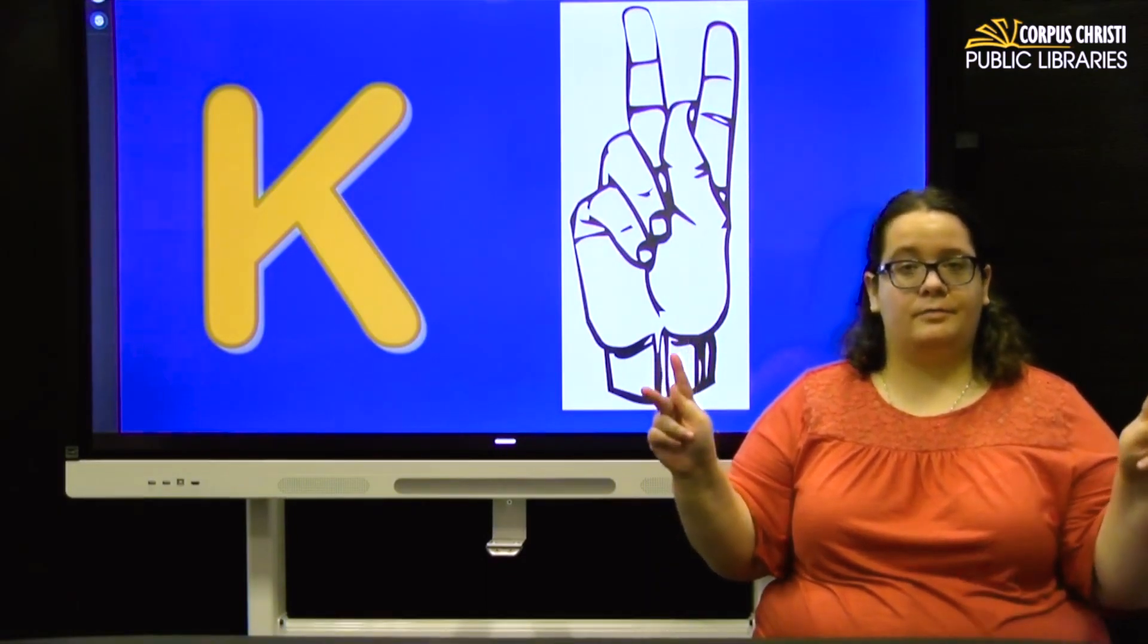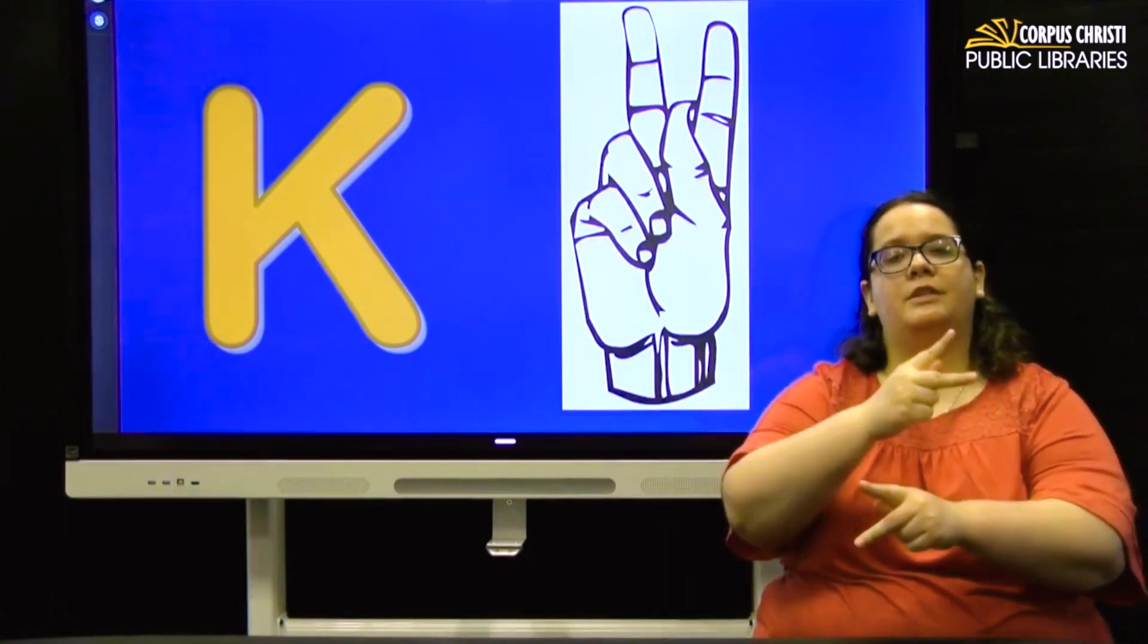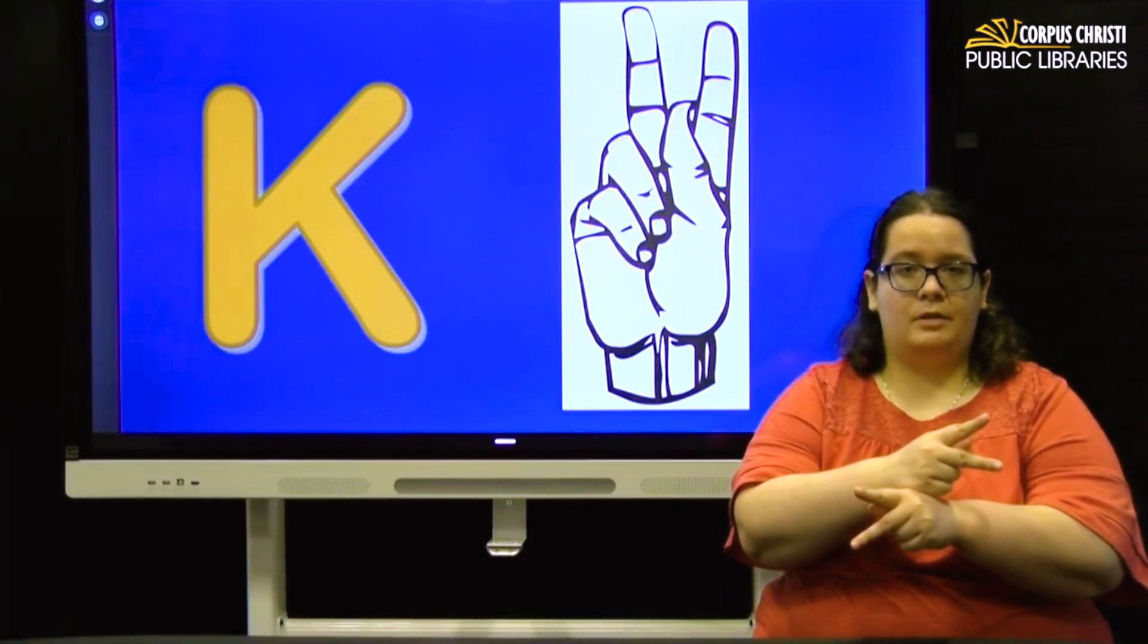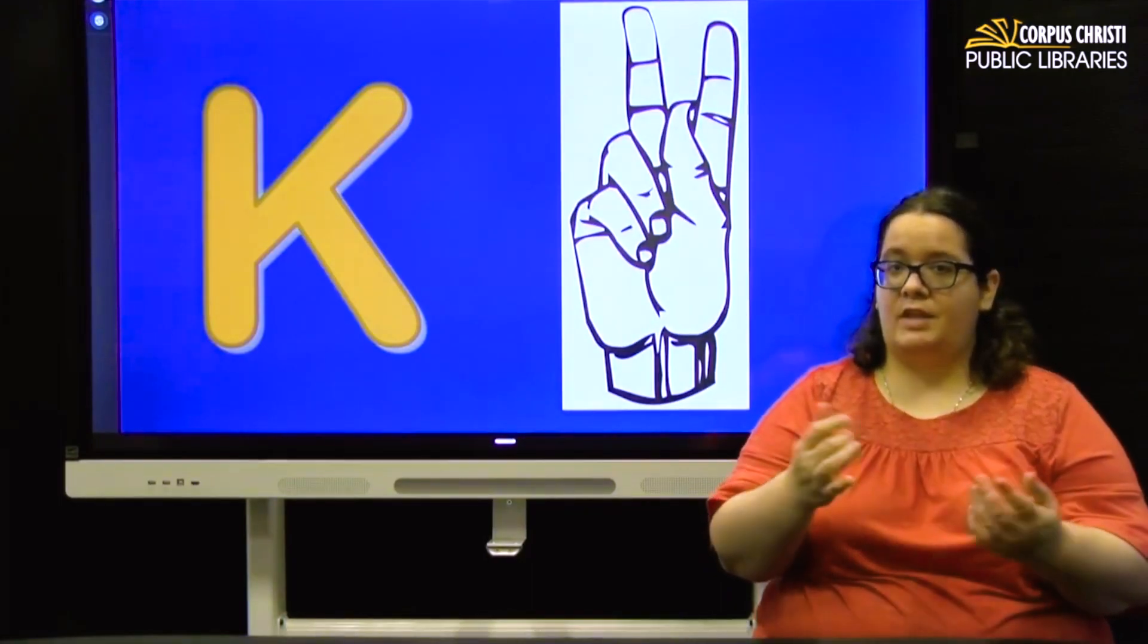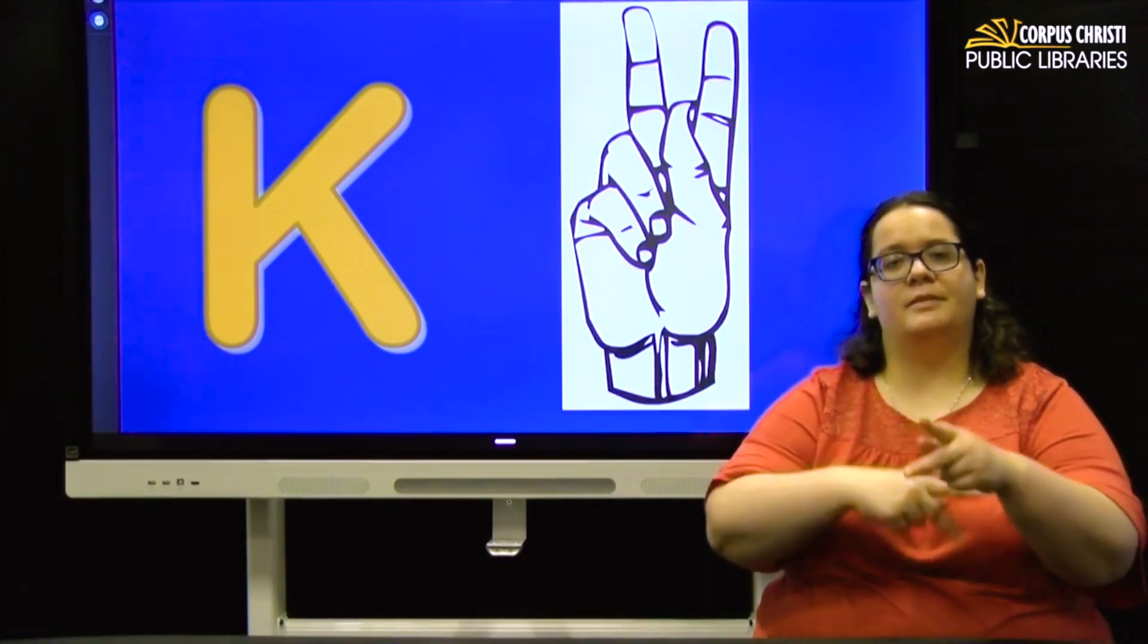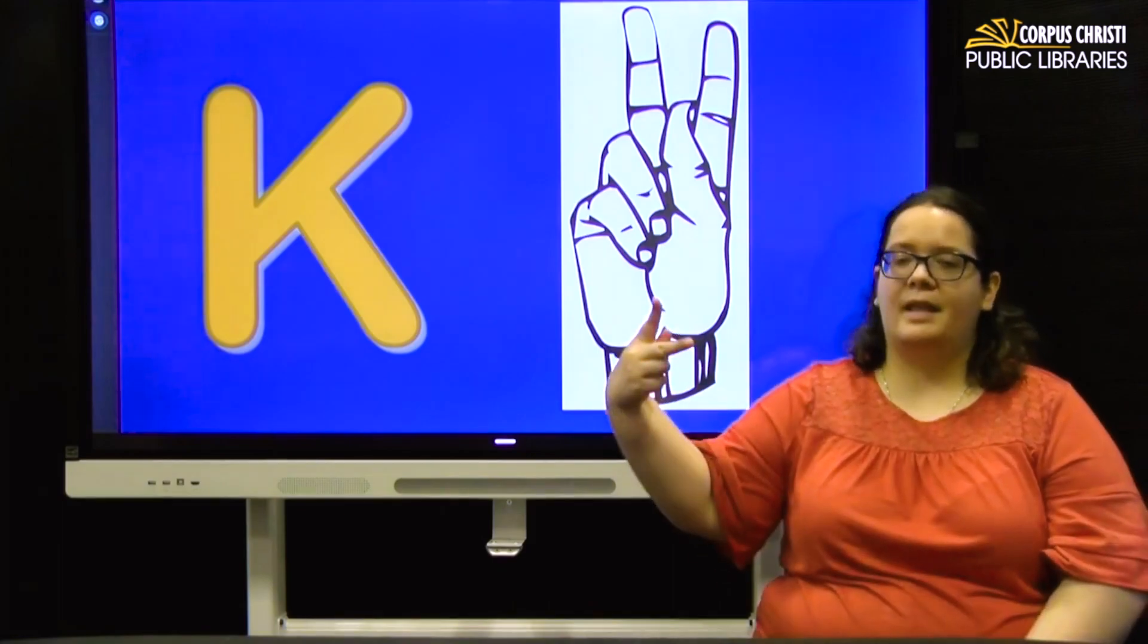And for K, if you take two of them and rotate them around each other, that is the sign for kind or type. So if someone says they had juice this morning, you can ask them, oh, what kind? So kind. K.